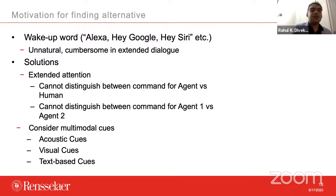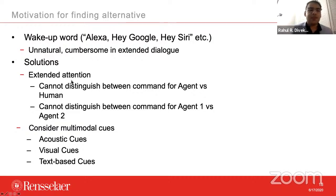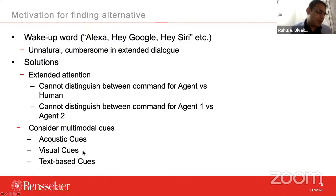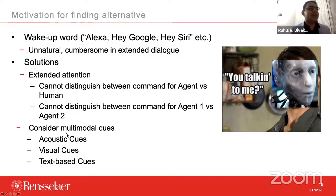There is no way for AI agents to know who is talking to who unless you say their name. Some solutions exist: one is extended attention — once you or the AI agent finish talking, the system still listens for about 10 more seconds. But this is not great if there is another human in the same room, because now the AI agent might think you're talking to it when you're actually talking to the other human. The other way is to understand multimodal cues — visual cues, acoustic cues, text-based cues, acoustic strength, where someone is looking, and so on.